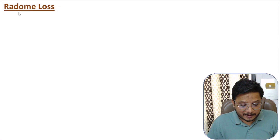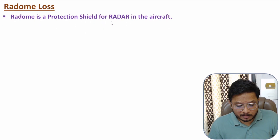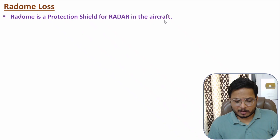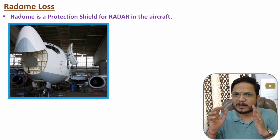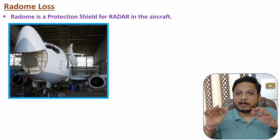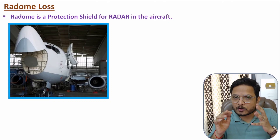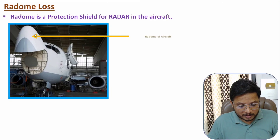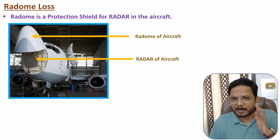The third category is radome loss. A radome is a protective shield for the radar system, especially used in aircraft. On the nose of the aircraft, a radome covers and protects the radar system from high air friction during flight. Because the radome is made of metal, it introduces some signal losses.